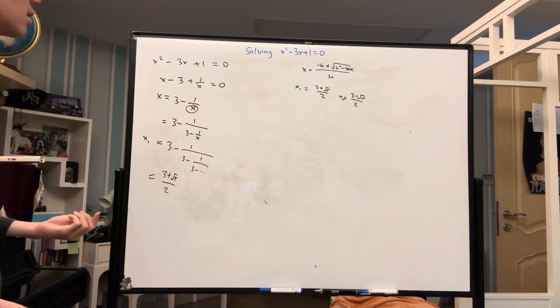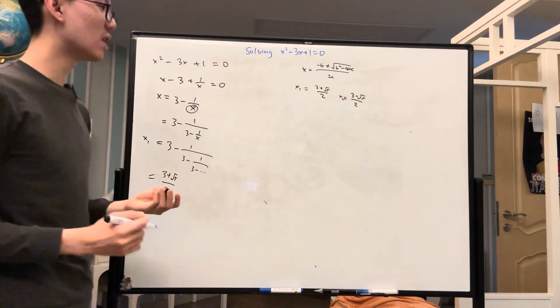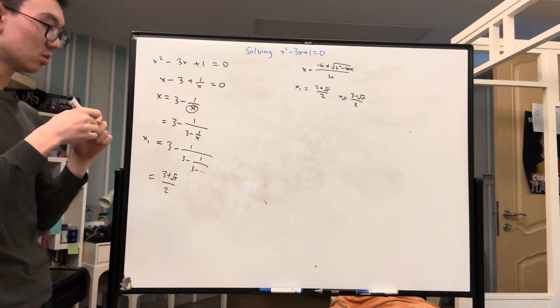What would the second root be? How can we get 3 minus root 5 over 2 by using this method?